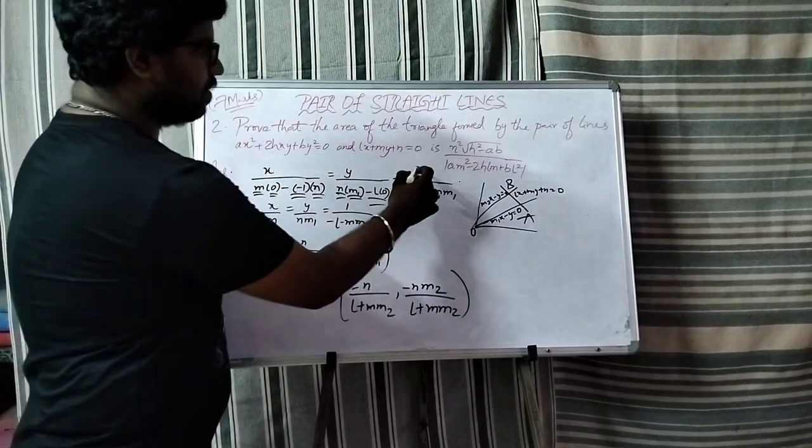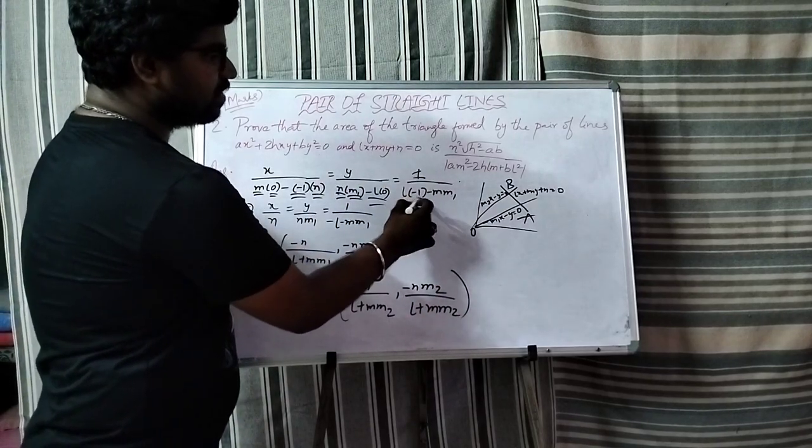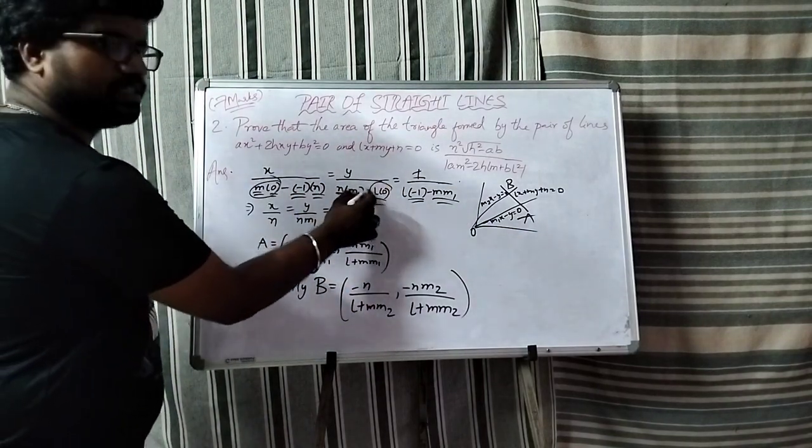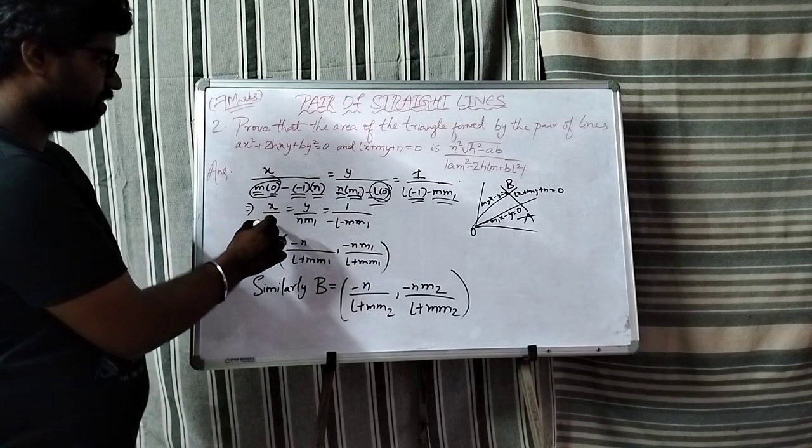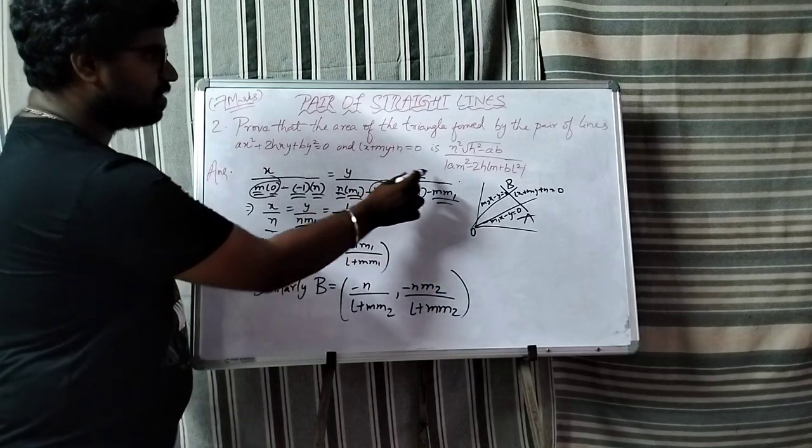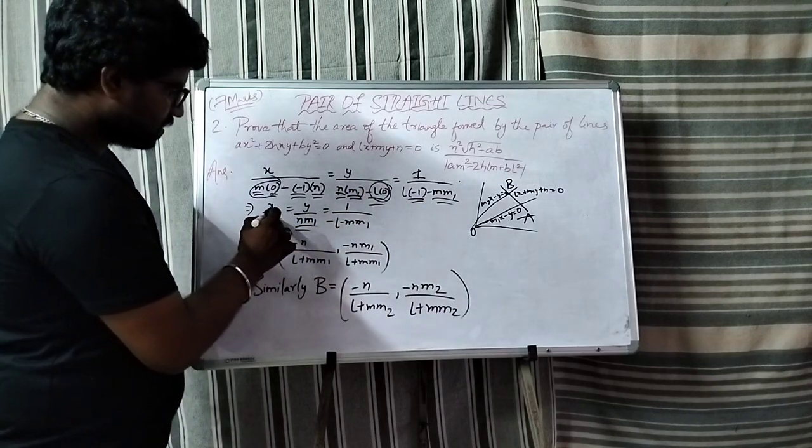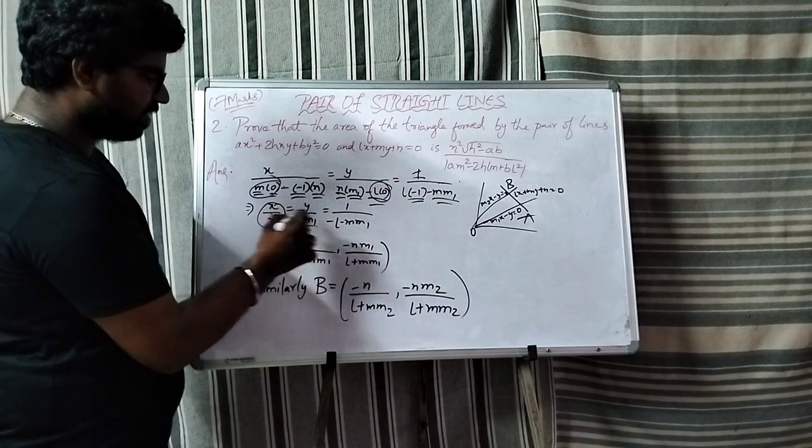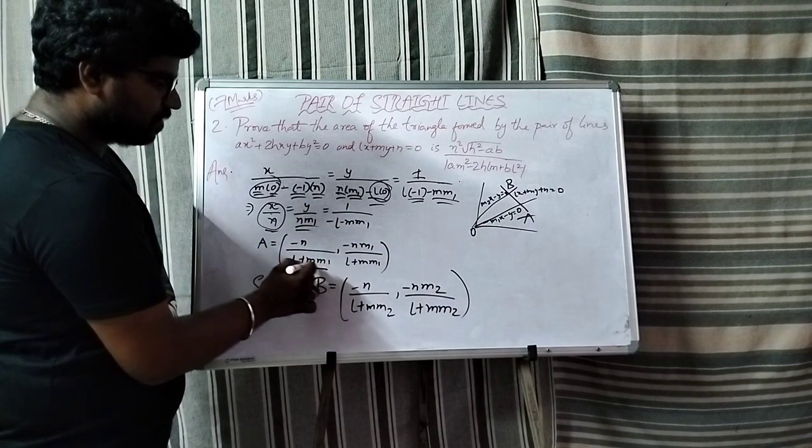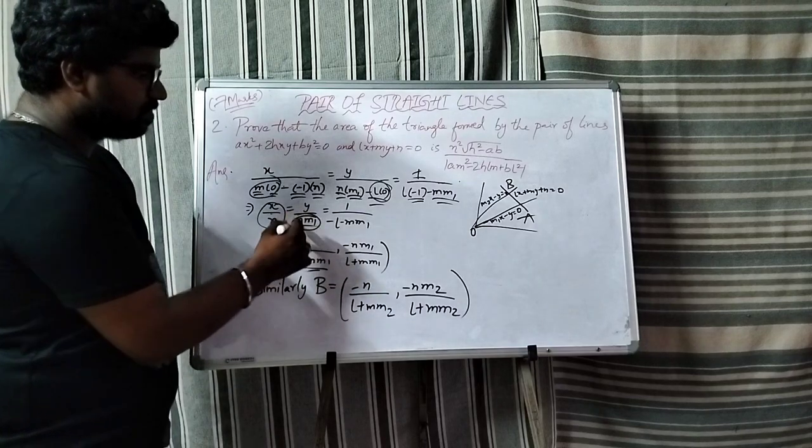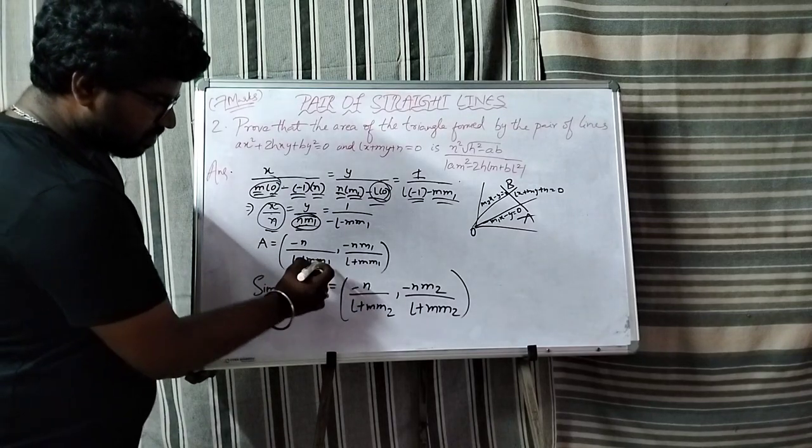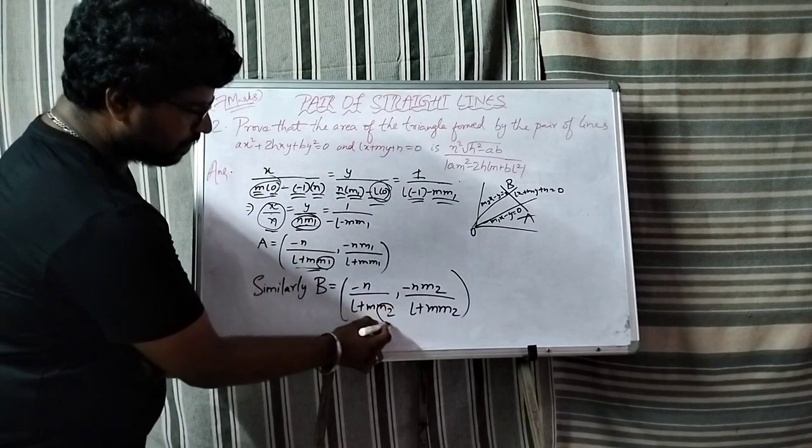So x by minus n and y by mm1. So x equal to minus n by l plus mm1. Similarly for the second line, replace m1 with m2.